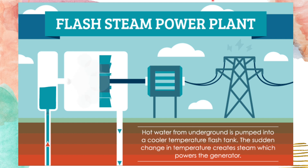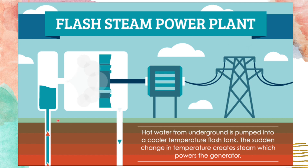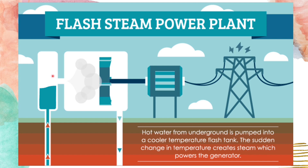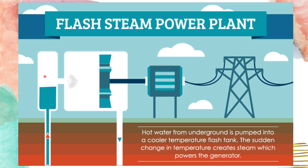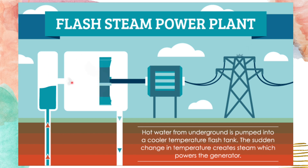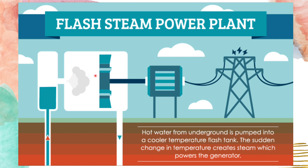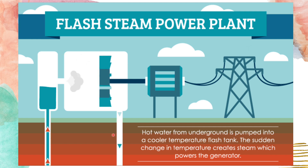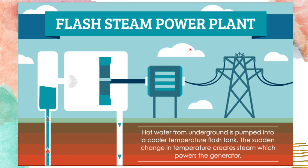Flash plants use high-pressure hot water converted into cool, low-pressure water. Hot water from underground is pumped into a flash tank with a cooler temperature. The sudden change in temperature creates steam, and the steam allows the turbines to move, powering the generator in order to produce electricity. This is how the flash steam power plant utilizes the heat of the Earth.